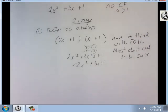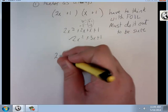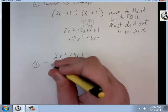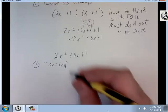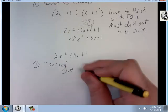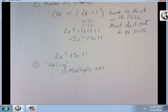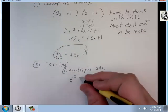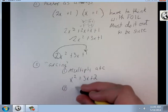All right, you have to do without to be sure. The other option, I'm just going to rewrite it so we have it in front of us. That's 2x squared plus 3x plus 1. It's called arcing. Multiply a and c. So I'm going to take this, multiply it into there. x squared plus 3x plus 2. And I'm going to factor the new equation.